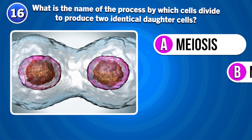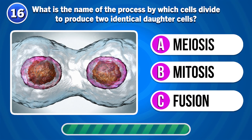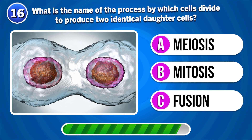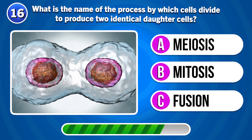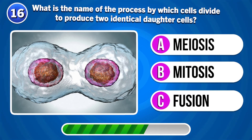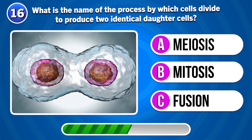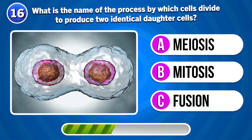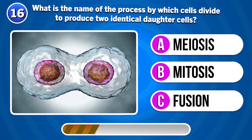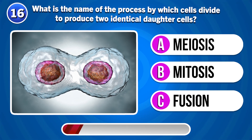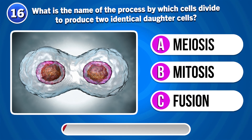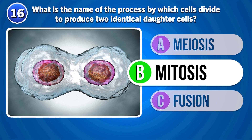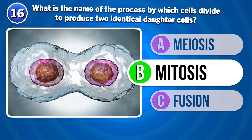What is the name of the process by which cells divide to produce two identical daughter cells? It's mitosis.